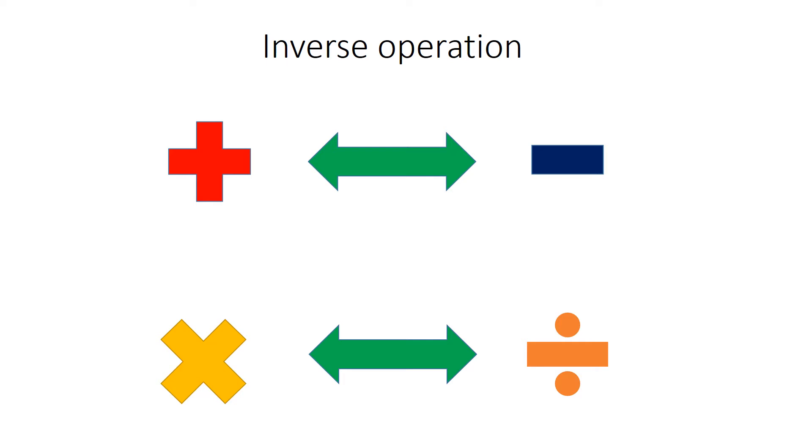So if we have an addition sum we can check it by using a subtraction sum, and if we have a multiplication sum we can check that using a division sum and vice versa. Let's look at some examples.